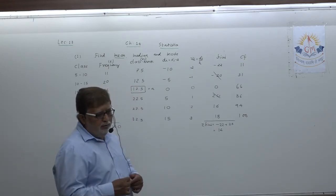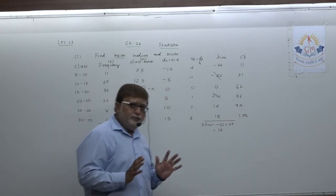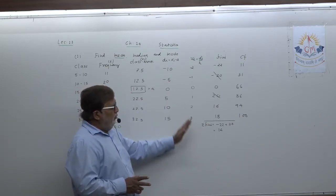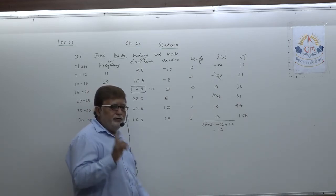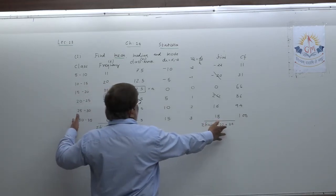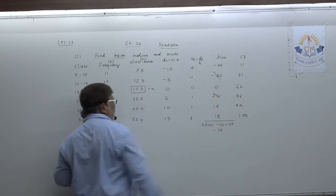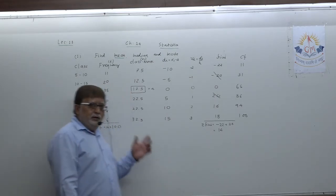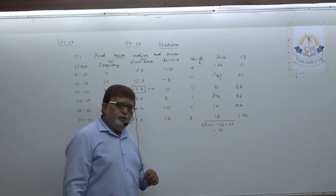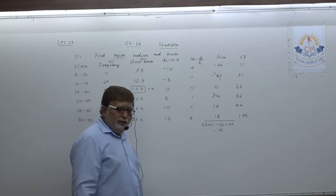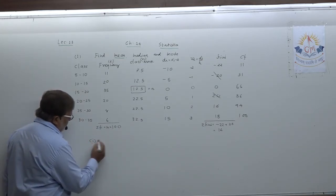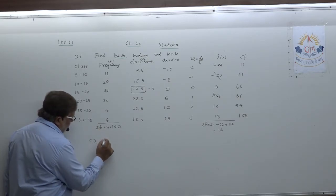These are the columns dear student you have to make: class, frequency, class mark, Di, Ui, Fi·Ui, and cumulative frequency. Now let us move for finding mean. For finding median of the data, N equals 100, so you look for the 50th observation in the CF column.